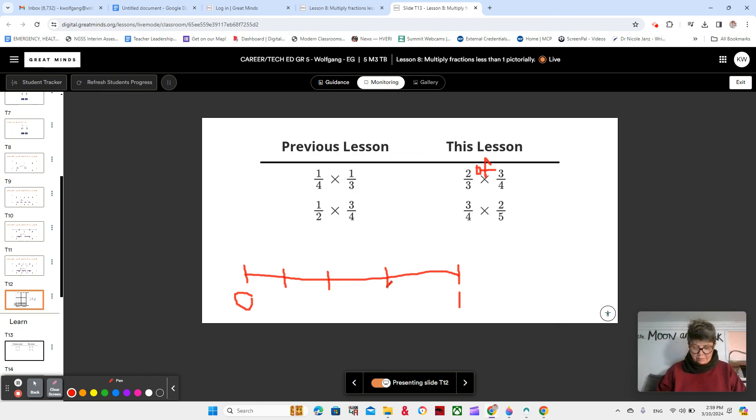And we're going to break that number line into fourths. 3 lines makes 4 fourths. And we're finding 2/3 of 3/4, so we're going to need to show fourths. And this would be 1/4. Make sure you're putting this in your notes. 2/4, 3/4. And 1 would be the same as 4/4. We could draw that if we needed to.